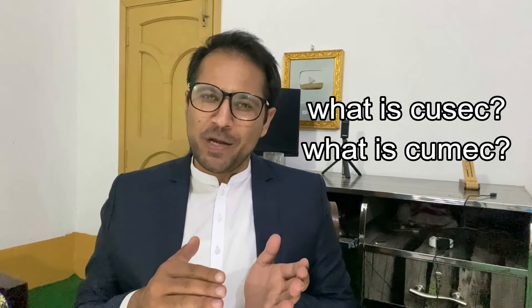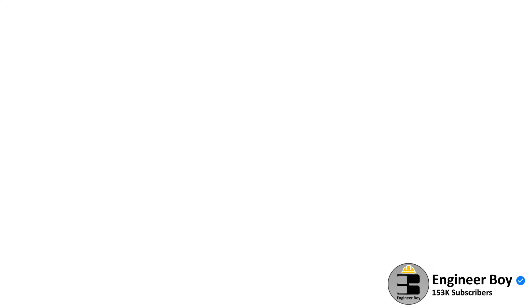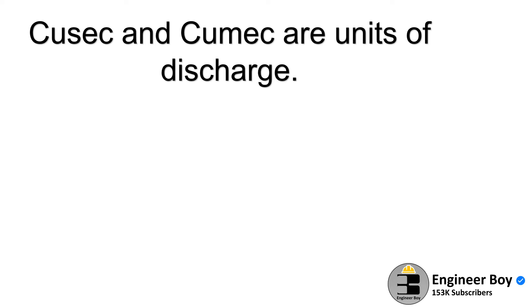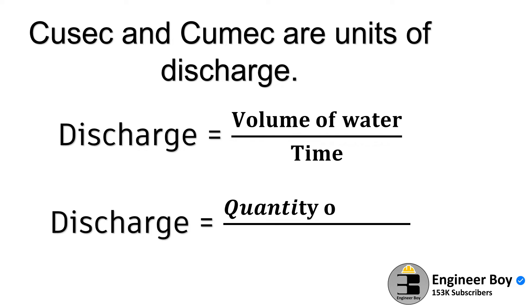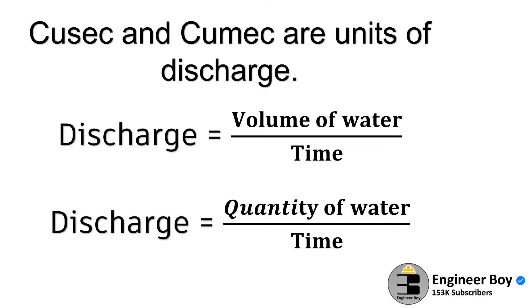So in this short video, we'll be answering what QSIC and QMIC mean. Basically, these both are units of discharge. And remember, discharge is the ratio of volume of fluid to unit time — meaning how much fluid or water is flowing per unit time through a specific section or point.